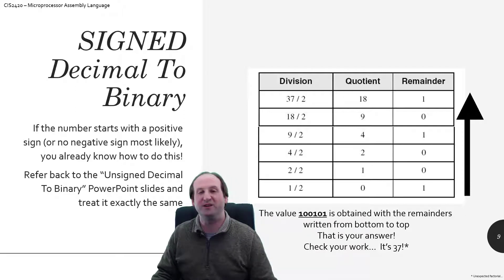When you're doing something like this, the same thing goes. If I tell you it's a signed number and it's a positive number, you already know how to do it. You just use the repeated dividing by two method, using the quotients and the remainders until you work the quotient down to zero, and then you work back up from bottom to top the remainders in reverse order, and you get the answer to your problem.